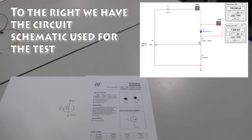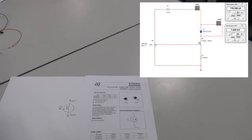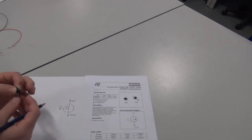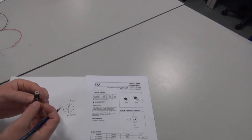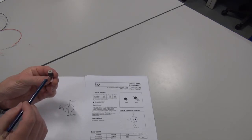We're going to design and build a circuit capable of testing the reverse conduction characteristic for a Zener diode. To do that we're going to use an n-channel MOSFET.